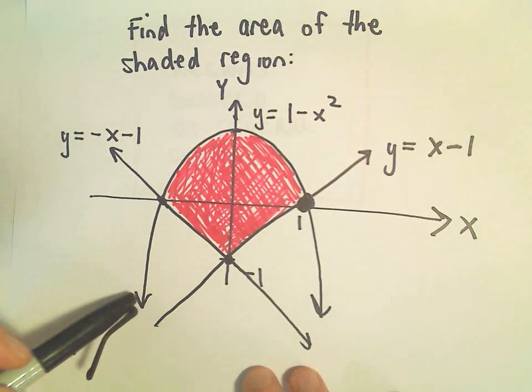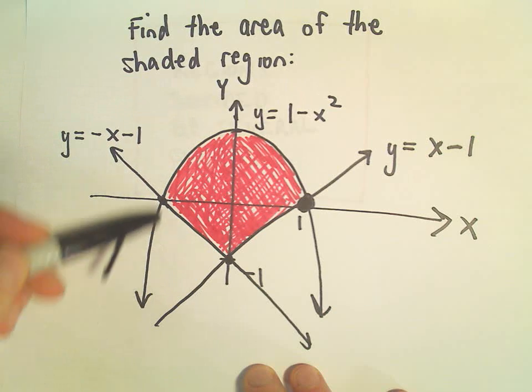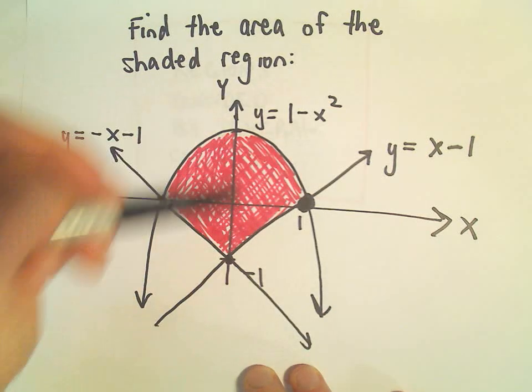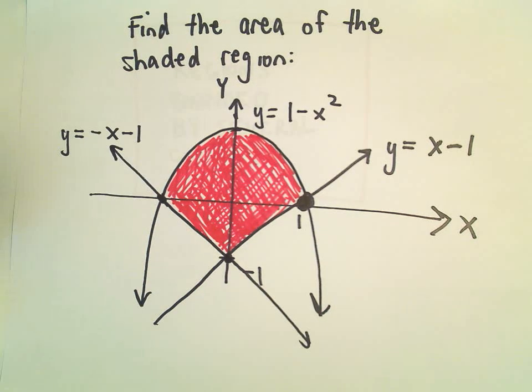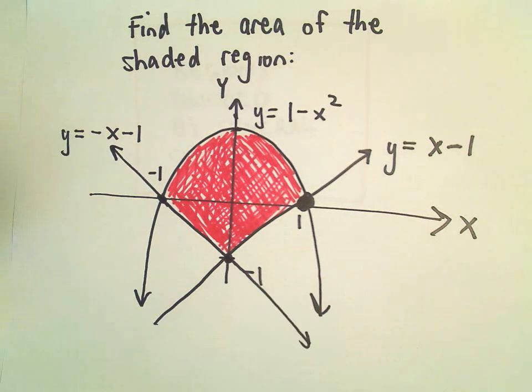So it's bounded above by the curve y equals 1 minus x squared, just a parabola opening downwards with a y-intercept of positive 1. Notice it would cross the x-axis at positive 1 and at negative 1.